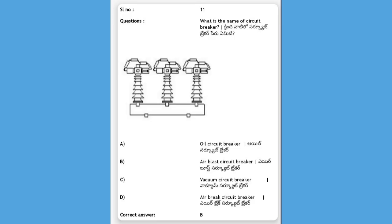What is the name of the circuit breaker shown in the diagram? Options: oil circuit breaker, air blast circuit breaker, vacuum circuit breaker, air brake circuit breaker. The answer is B, air blast circuit breaker.